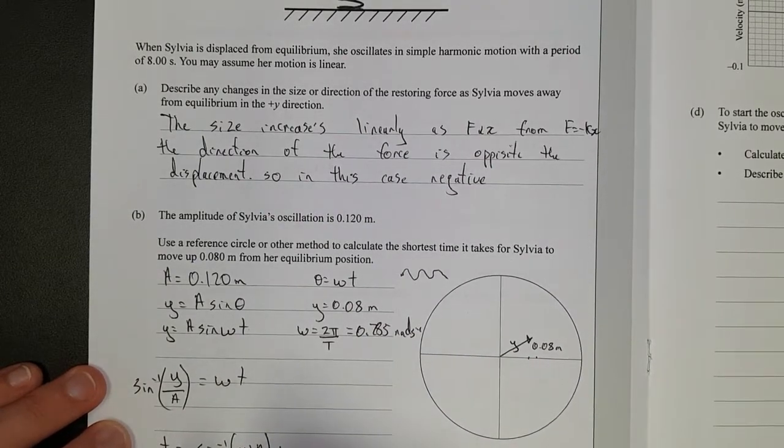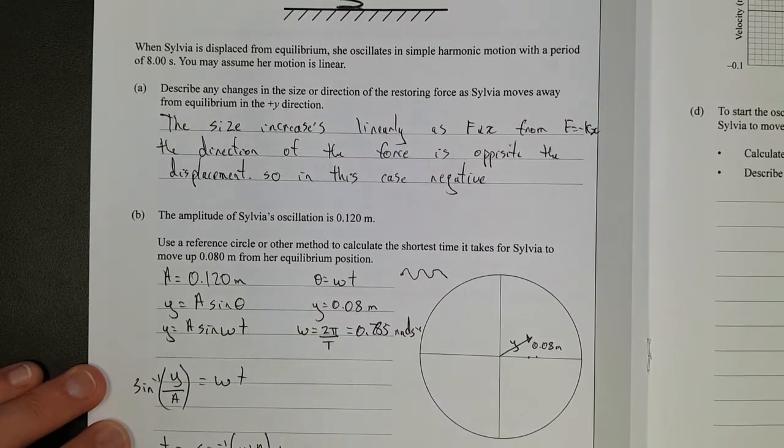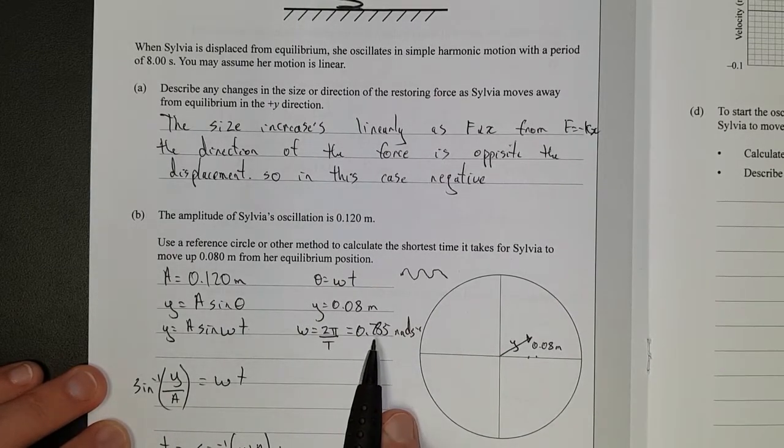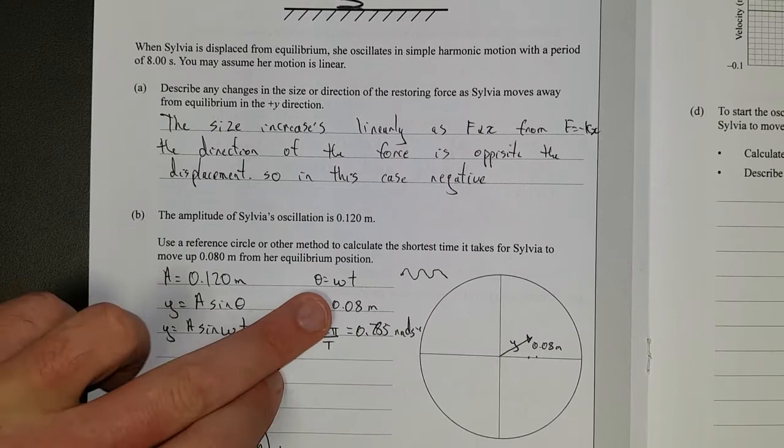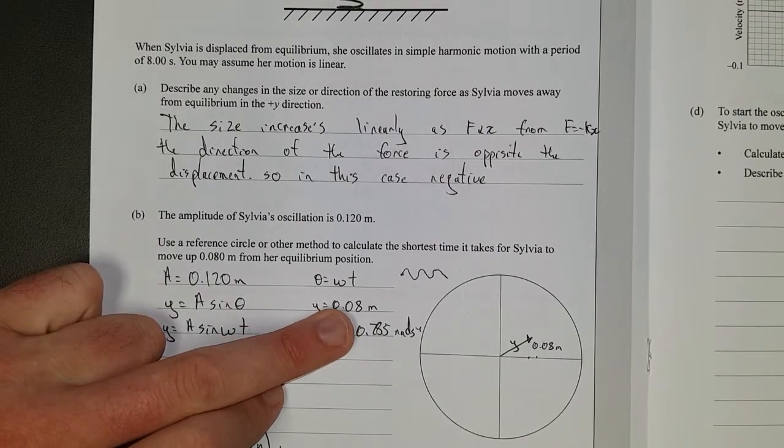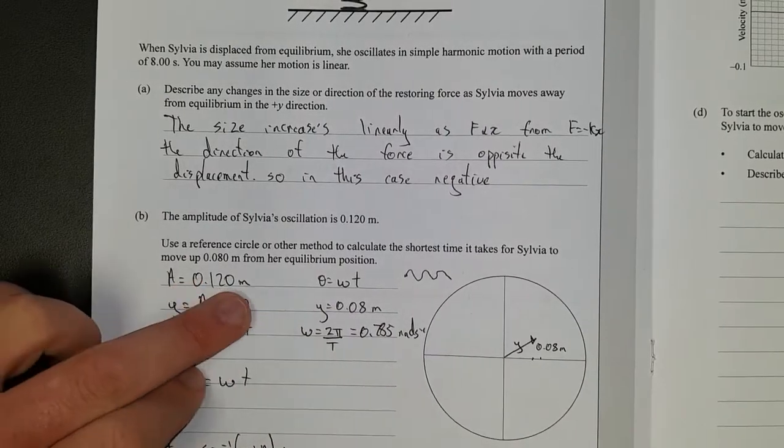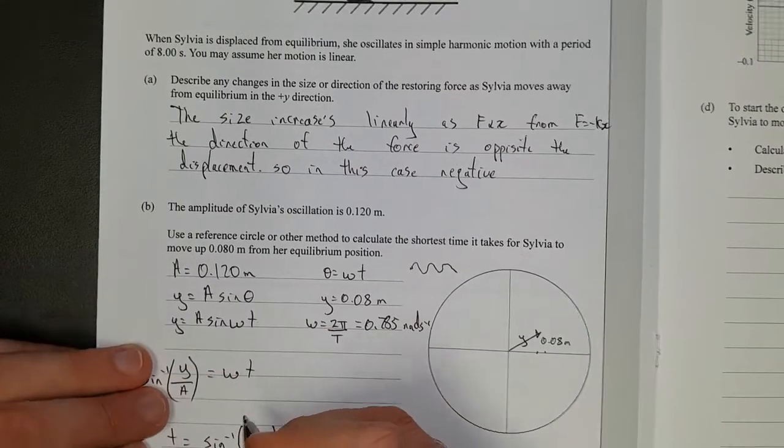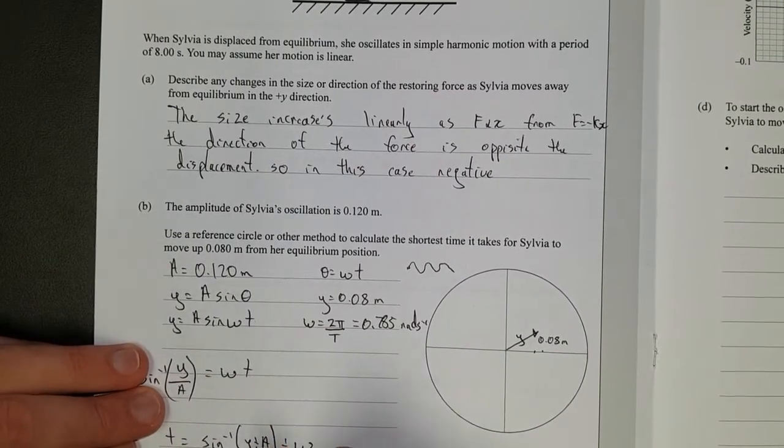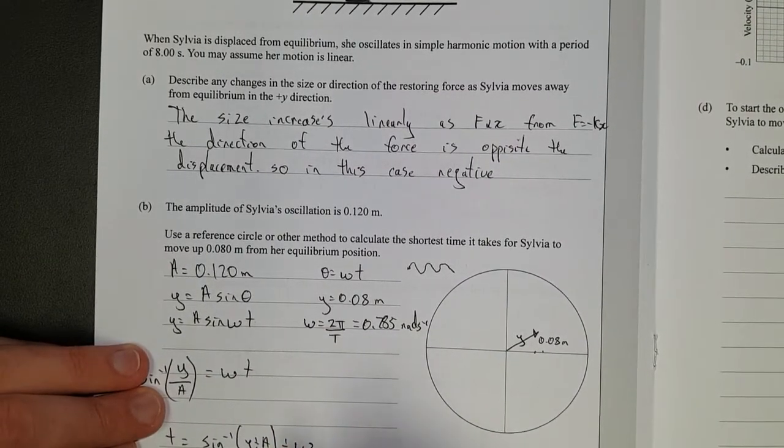And if you plug and chug, you plug in your numbers that you have up here. So you plug in y for 0.08, a for that, omega for that, it'll give you 0.929 seconds.